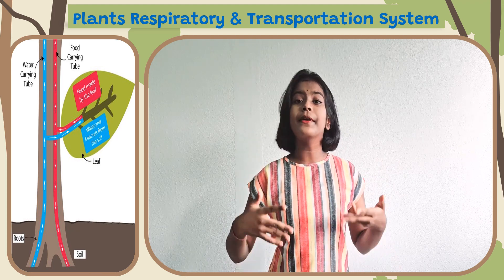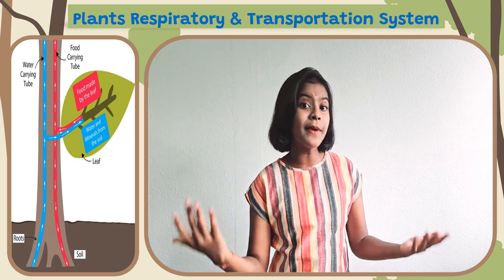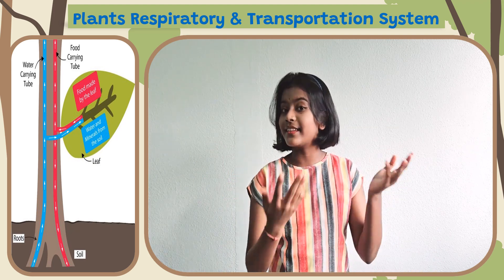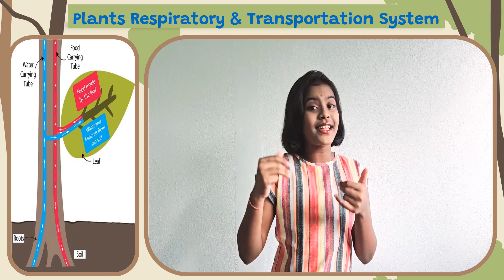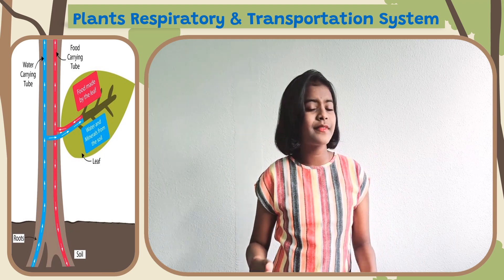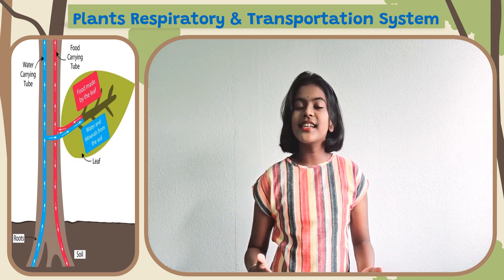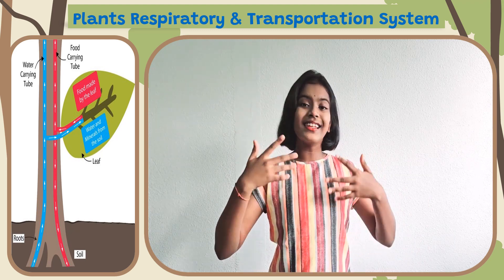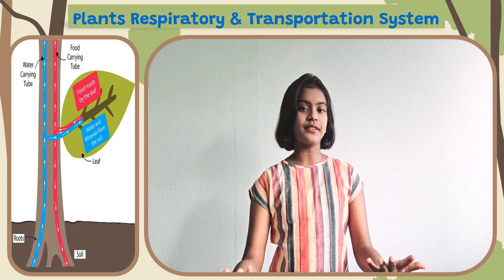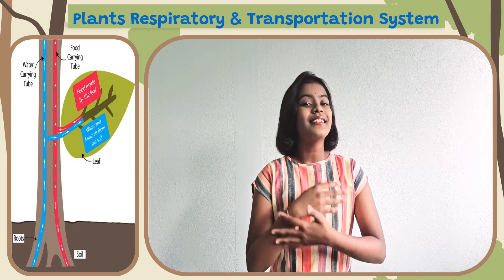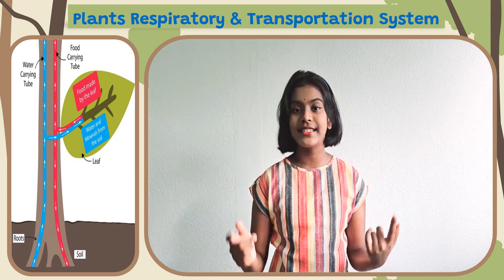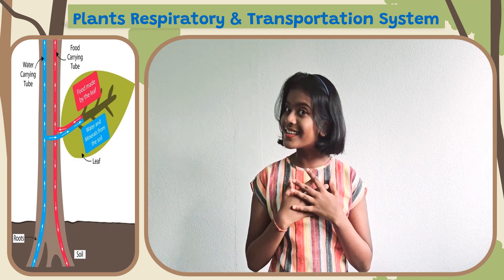A plant breathes through the stomata, located underneath the leaves and stem. They take in carbon dioxide and let out oxygen. They breathe all the time, just like us.